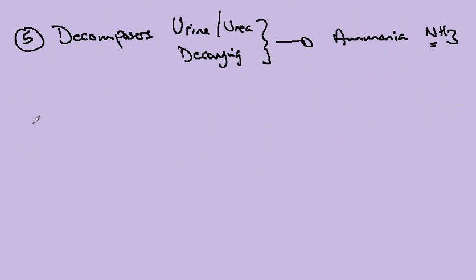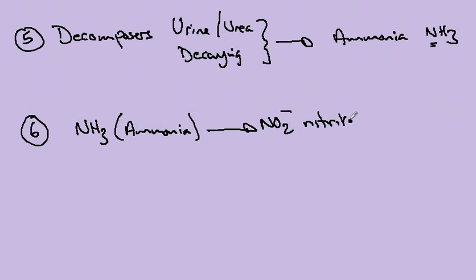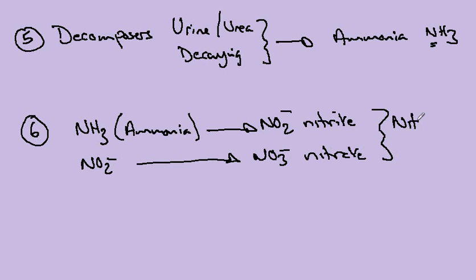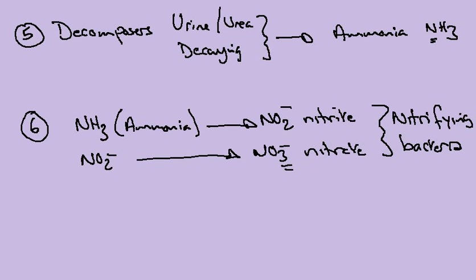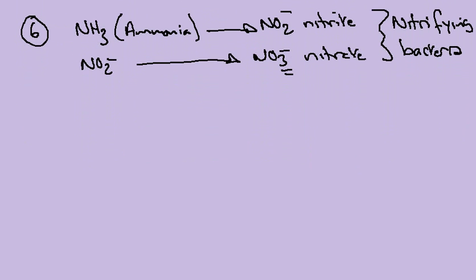But you'll remember that ammonia is not the form that the plants want. And so it's necessary to convert this ammonia into what's called NO2 minus. This is called nitrite. And then NO2 minus can be converted into NO3 nitrate by a group of bacteria called nitrifying bacteria. So now we've got the nitrate back to the plants ready to be absorbed and recycled in plants.